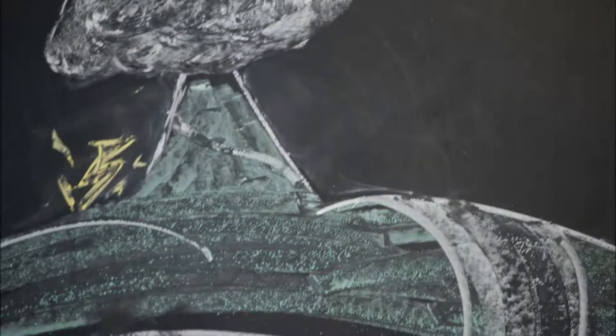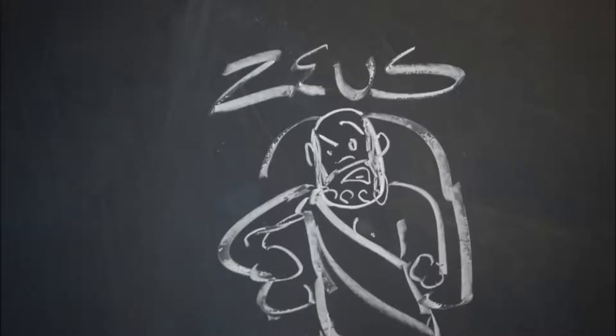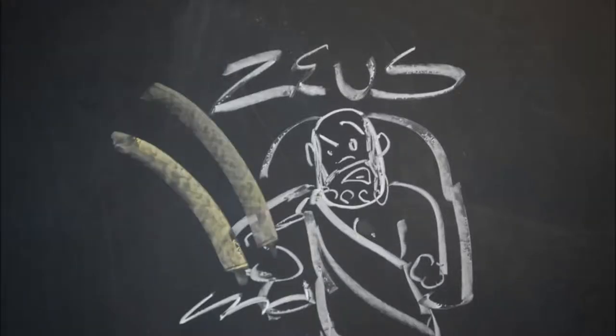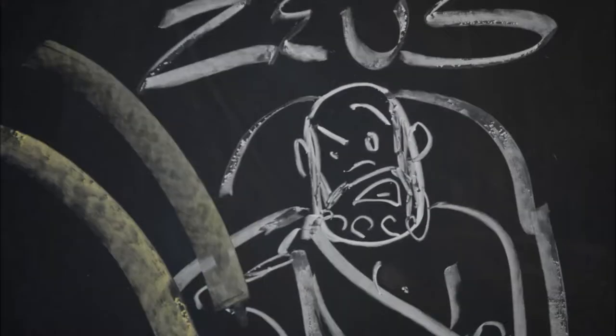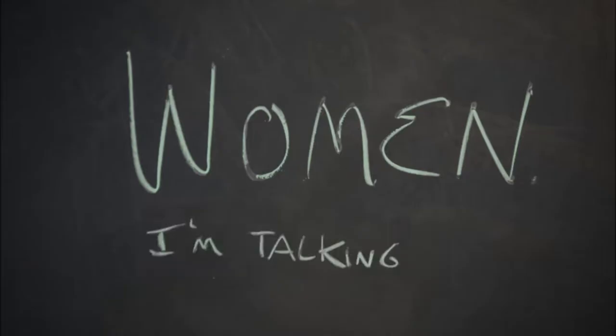Zeus, father of the gods, was not happy with this, and decided to punish Prometheus' creation by giving them something horrible. But something that they thought they wanted. Something... Women. I'm talking about women.